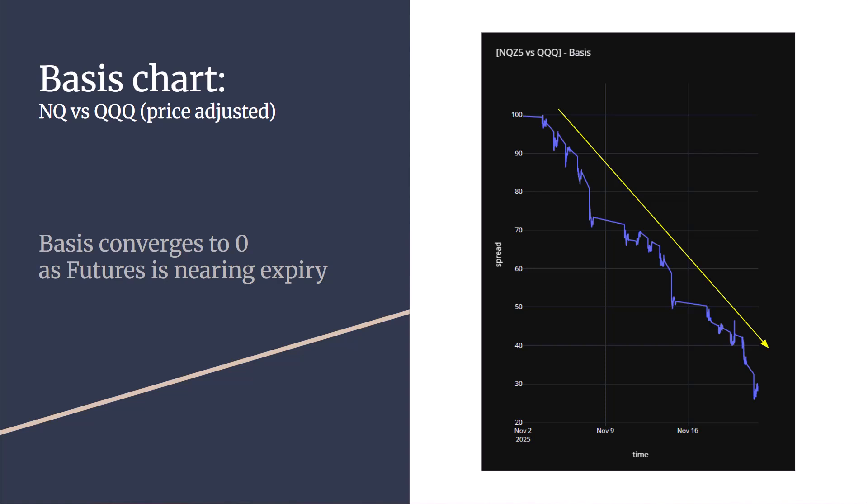What you can see on the chart is the basis between the NQZ5 contract, which is the NASDAQ 100 futures expiring in December 2025, and the basis against the QQQ contract, which is the NASDAQ ETF. As you can see that over time, as time goes on, the basis is decreasing. That is because futures against spots follow one fundamental rule: as time goes on, or as futures is nearing expiry, basis will converge to zero. In other words, at the expiry date, the price between the futures and spot product should be the same.